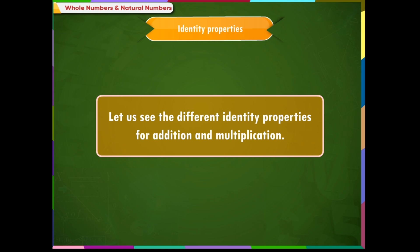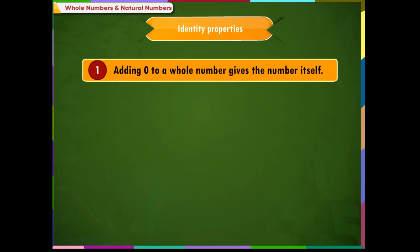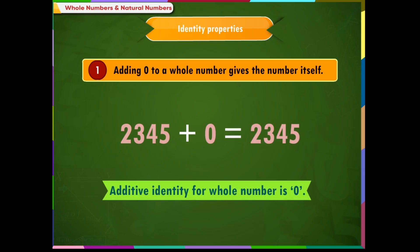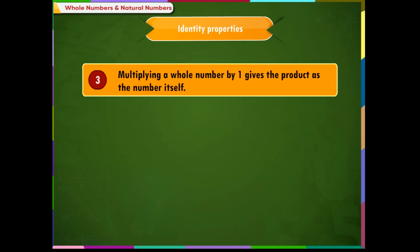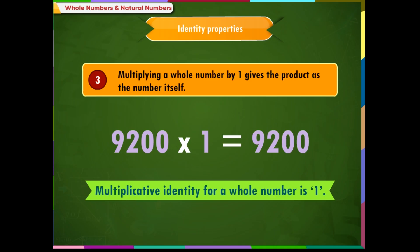Identity properties: First, adding 0 to a whole number gives the number itself — for example, 2345 plus 0 equals 2345. We call 0 the additive identity. Second, multiplying any whole number by 0 gives the product as 0 — for example, 678 into 0 equals 0. Third, multiplying a whole number by 1 gives the number itself — for example, 9200 into 1 equals 9200. We call 1 the multiplicative identity.